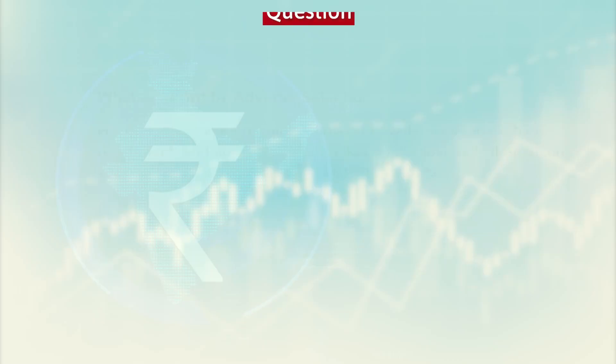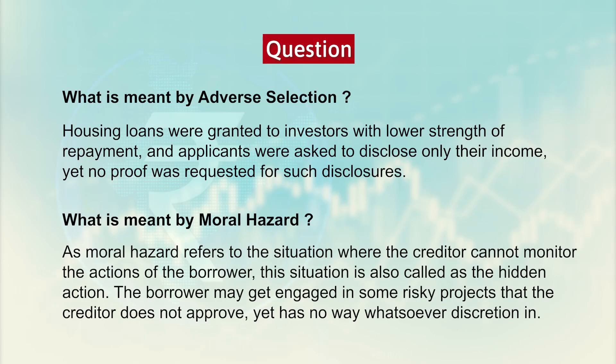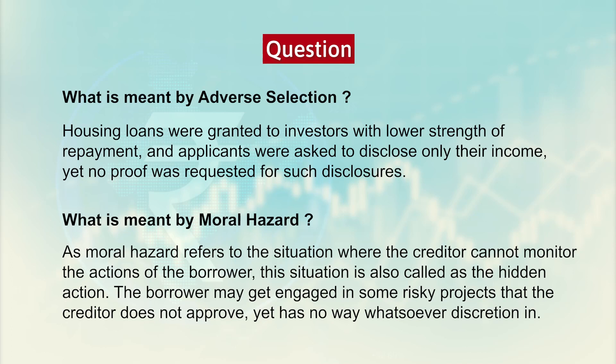Regarding the two problems of asymmetric information: what is meant by adverse selection? Housing loans were granted to investors with lower strength of repayment, applicants were asked to disclose their income but no such disclosures came up — meaning the people to whom loans are provided are not the right people because the creditors have no information regarding the full strength of borrowers. What is meant by moral hazard? Moral hazard refers to the situation where the creditor cannot monitor the actions of the borrower, and thereby the investment the borrower makes by taking the loans cannot be regulated or intervened. In most cases the borrower may get engaged in risky projects which the creditor does not approve but also cannot intervene in. This is a problem of moral hazard particularly in the financial markets.